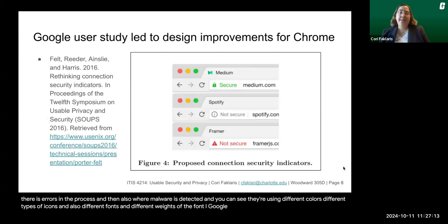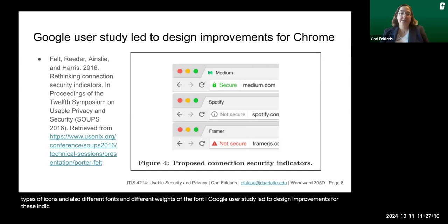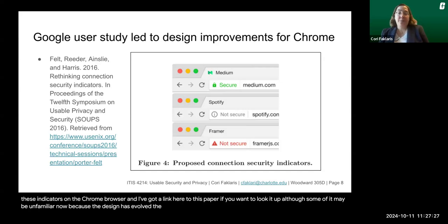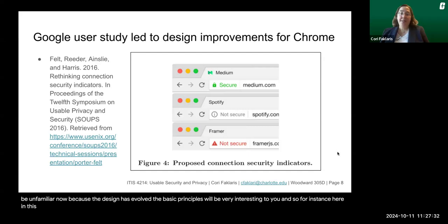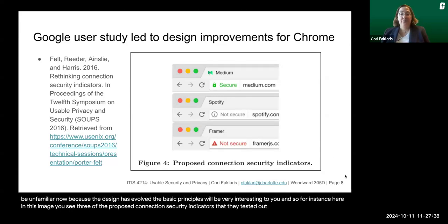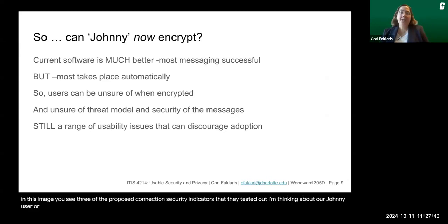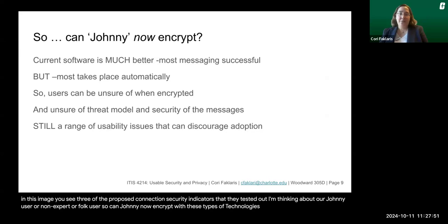A Google user study led to design improvements for these indicators on the Chrome browser. I've linked to that paper here; although some of it may be unfamiliar now because the design has evolved, the basic principles will be very interesting. This image shows three of the proposed connection security indicators they tested out. Thinking about our non-expert or 'Johnny' user — can Johnny now encrypt with these types of technologies and indicators that we have created?